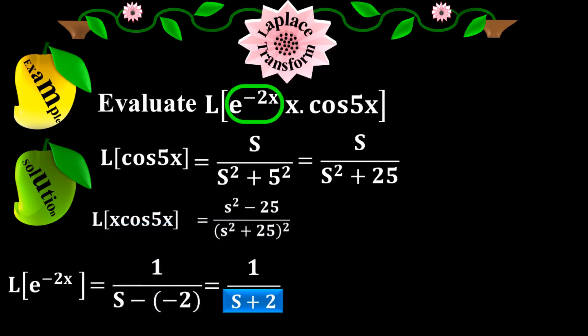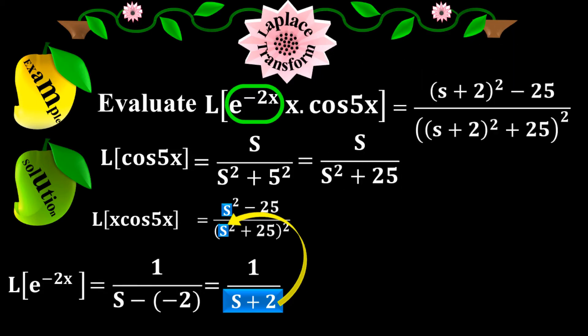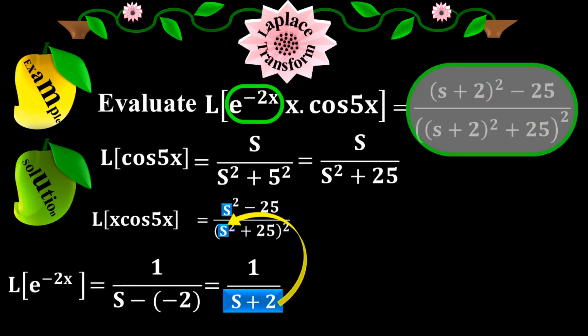Now substitute s plus 2 for s in both the numerator and denominator of the equation for the Laplace of x times cos(5x). Doing the substitution gives the final value: s plus 2 squared minus 25, all over s plus 2 squared plus 25, the whole squared. This is the final answer for the given function, which is the product of the three sub-functions.